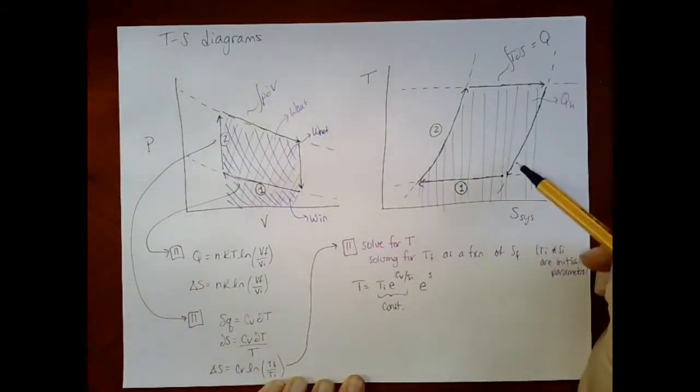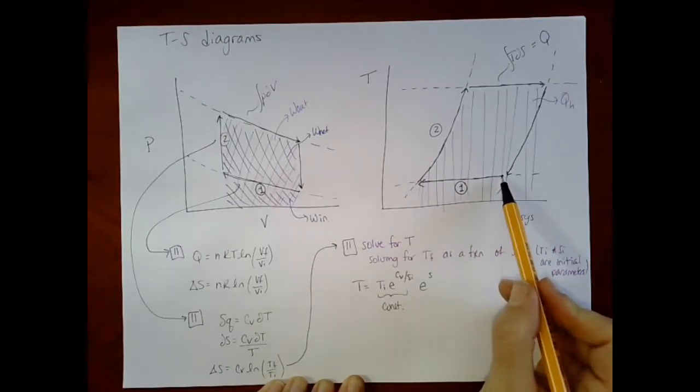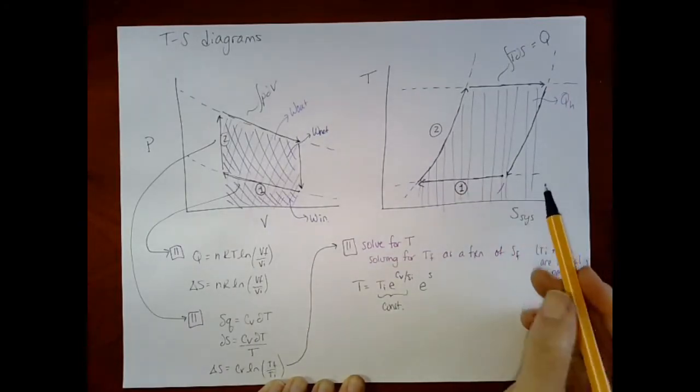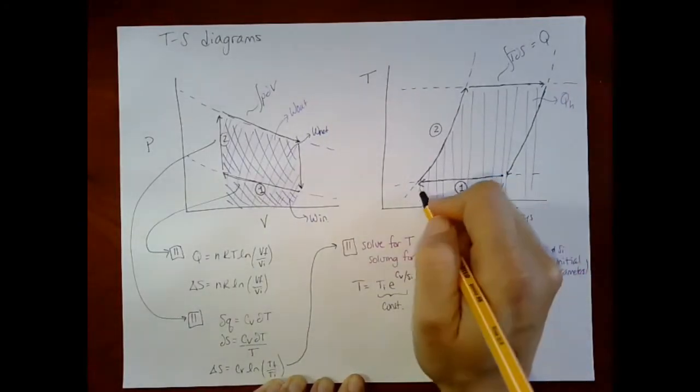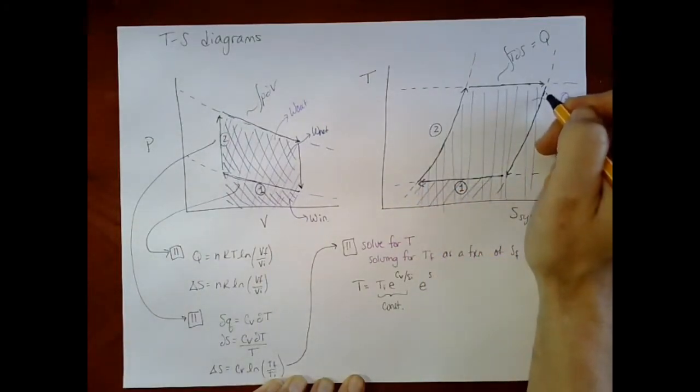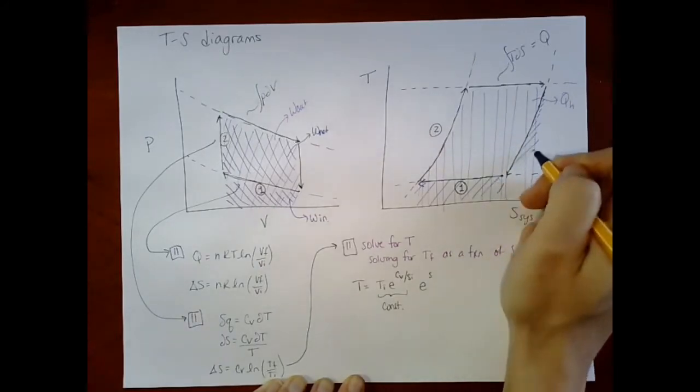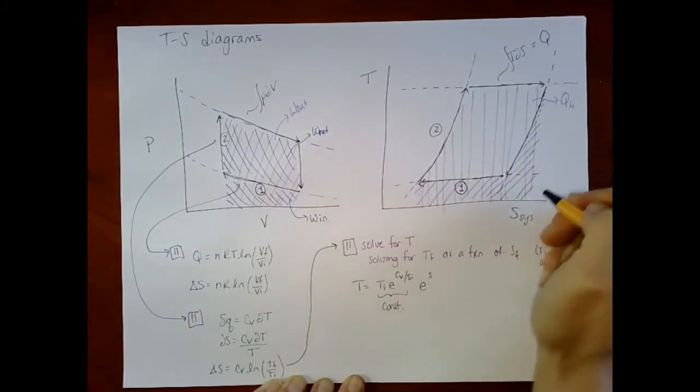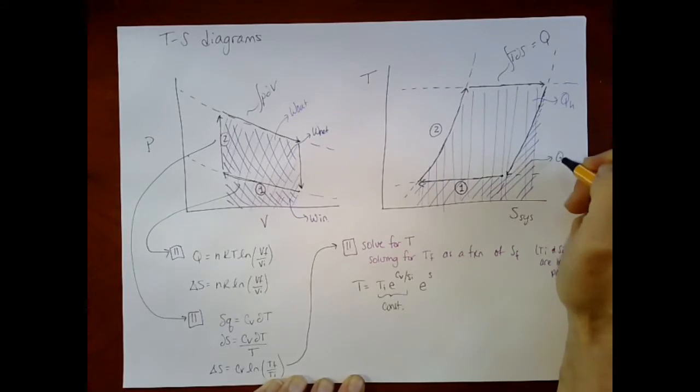These two curves represent the processes where I'm dissipating heat to my cold reservoir. So there's QC.